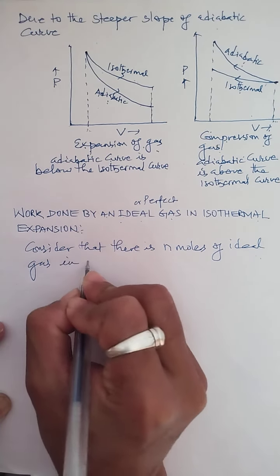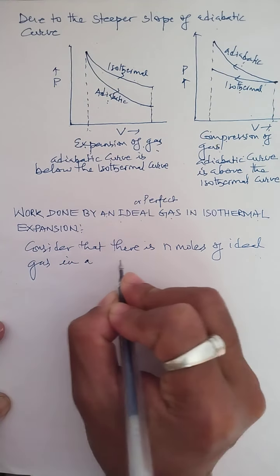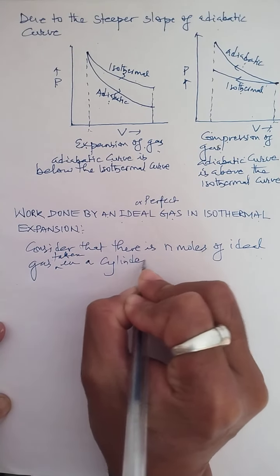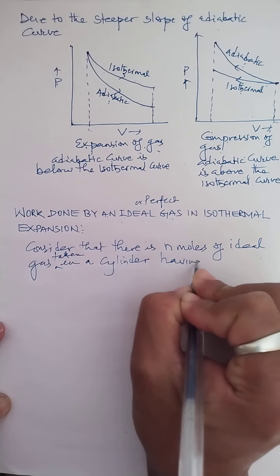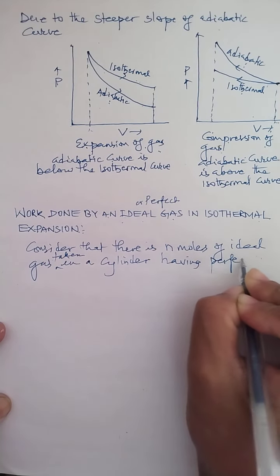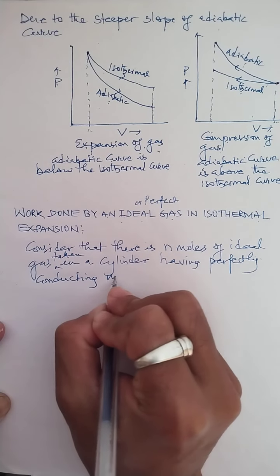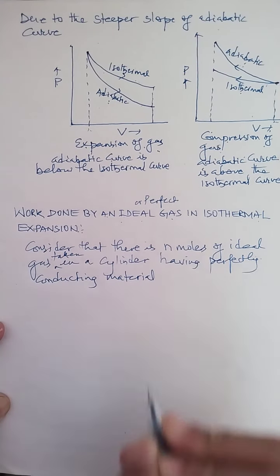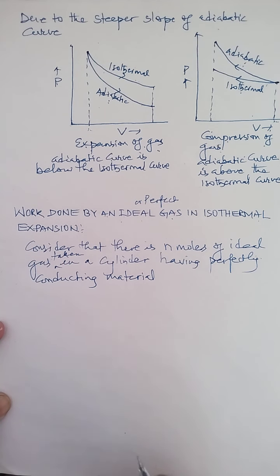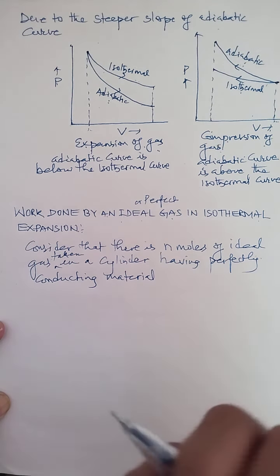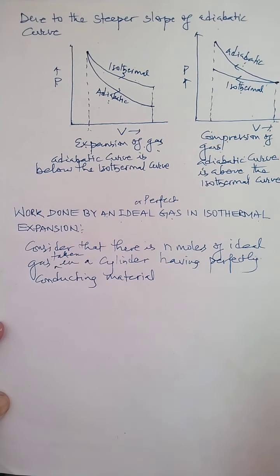This gas is taken in a cylinder having perfectly conducting material. That means the cylinder as a surrounding is made up of perfectly conducting material. When this gas is taken in this perfectly conducting cylinder, we do the expansion of the gas. Volume increases means there is expansion of gas.